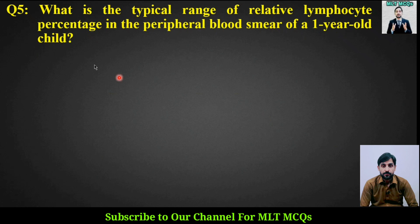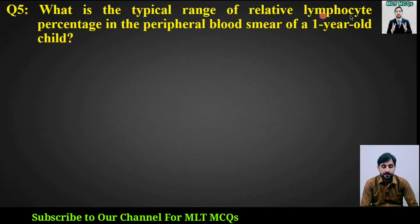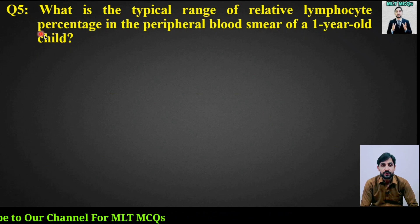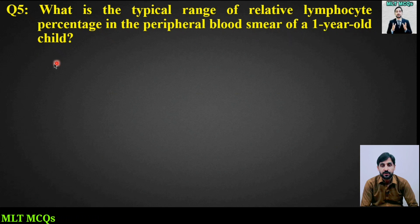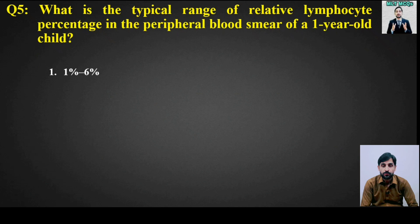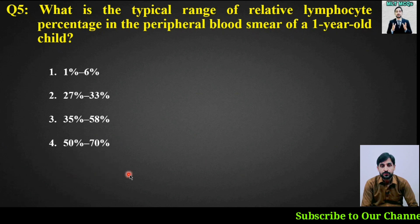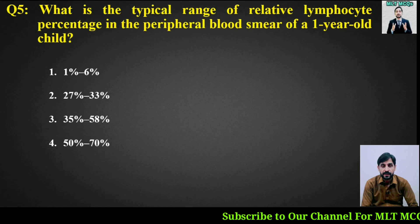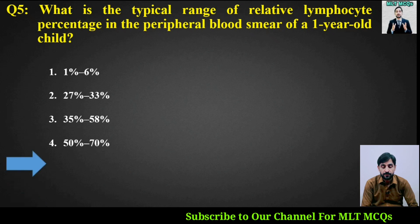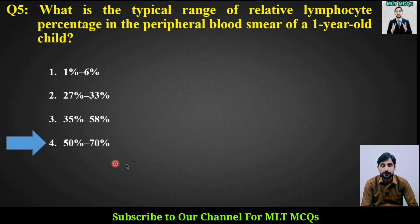MCQ number 5: What is the typical range of relative lymphocyte percentage in the peripheral blood smear of a 1-year-old child? Options are: 1 to 6 percent, 27 to 33 percent, 35 to 58 percent, or 50 to 70 percent. The right answer is option number 4, 50 to 70 percent.